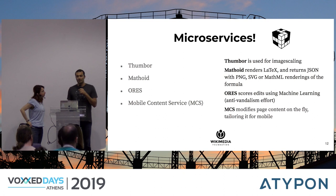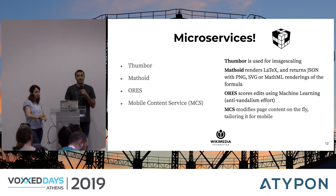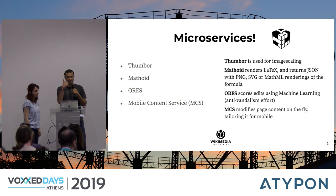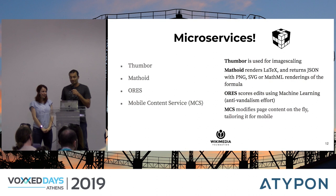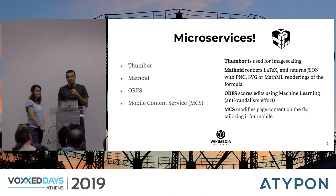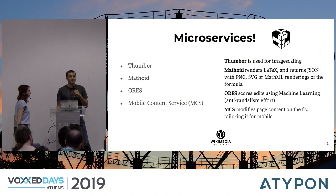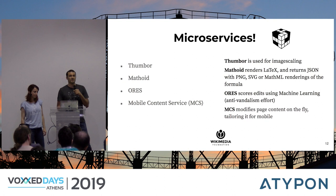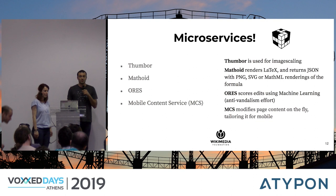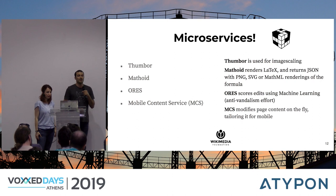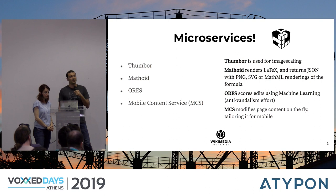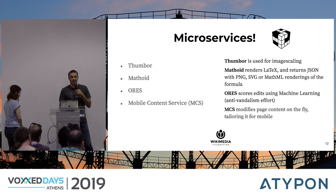Let me talk about a few of these microservices. We have Thumblr, a software we've contributed to, used for image scaling — as of a couple of years ago, we no longer use MediaWiki for image scaling. We have Mathoid, written by one of our volunteers, which renders from LaTeX PNG and SVG versions of math formulas — if you've gone to any Wikipedia page containing a math formula, you've interacted with it. We have a software that uses machine learning to help with anti-vandalism efforts, scoring various revisions on the probability that they are spam or bad faith. And we have a mobile content service that modifies page content on the fly — if you use the Wikimedia app for iOS or Android, you've interacted directly with it.